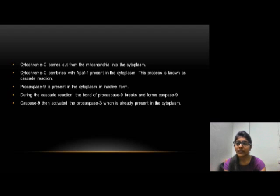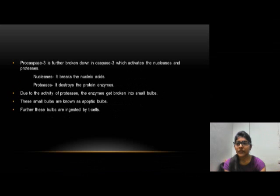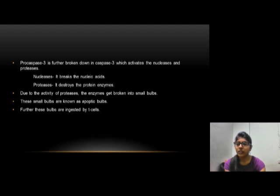Caspase-9 then activates Procaspase-3, which is already present in the cytoplasm. Procaspase-3 is broken down into active Caspase-3, which activates Nuclease and Protease. Nuclease breaks the nucleic acids, and Protease destroys protein enzymes. Due to the activity of Protease, the enzymes are broken into small vesicles known as apoptotic bodies. These apoptotic bodies are then engulfed by phagocytes or neighboring cells.